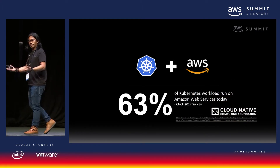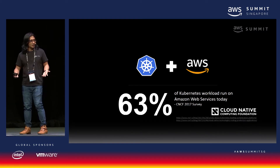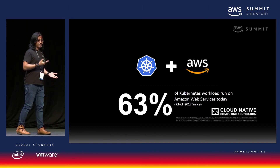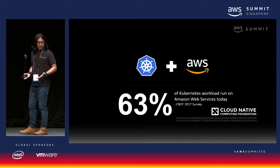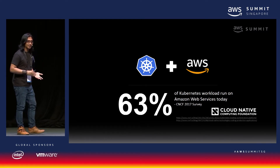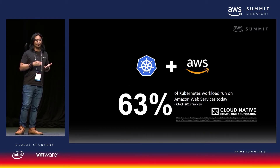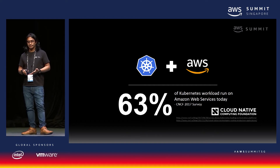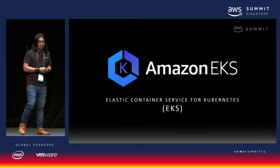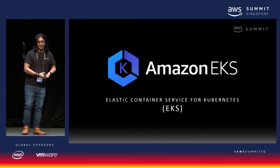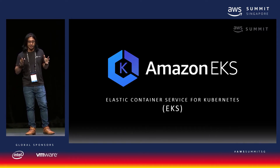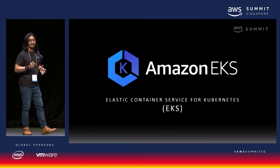But how about Kubernetes? A lot of our customers are running Kubernetes. I took this survey from CNCF — a 2017 survey showing that 63% of Kubernetes workloads run on AWS. That's a really fascinating fact. We listened, and that's why last year during re:Invent 2017 we built Elastic Container Service for Kubernetes — or in short, Amazon EKS.